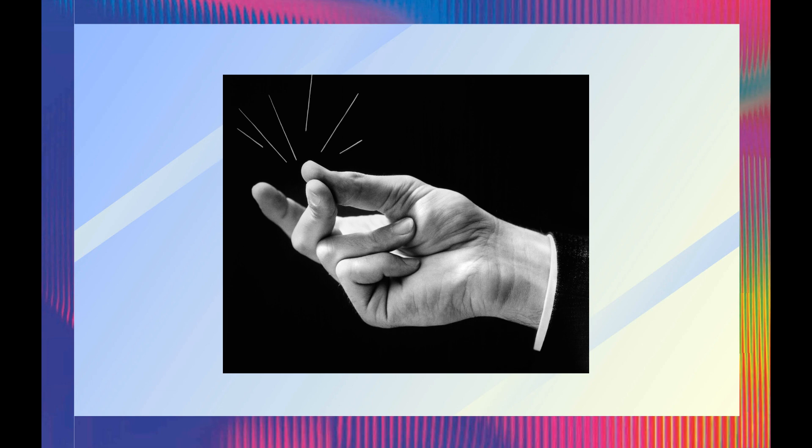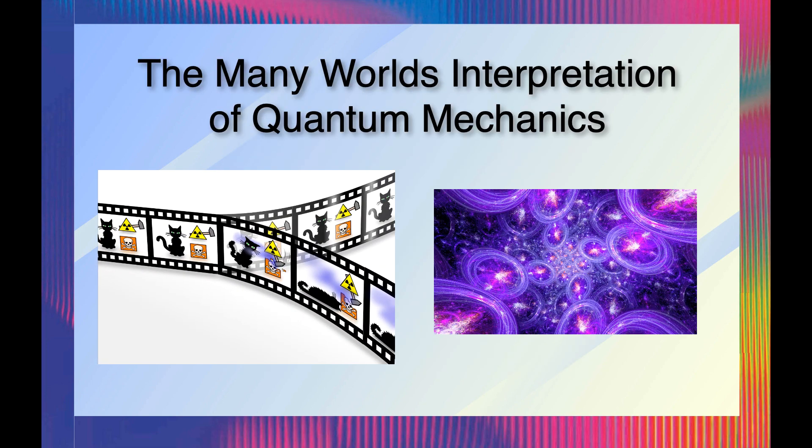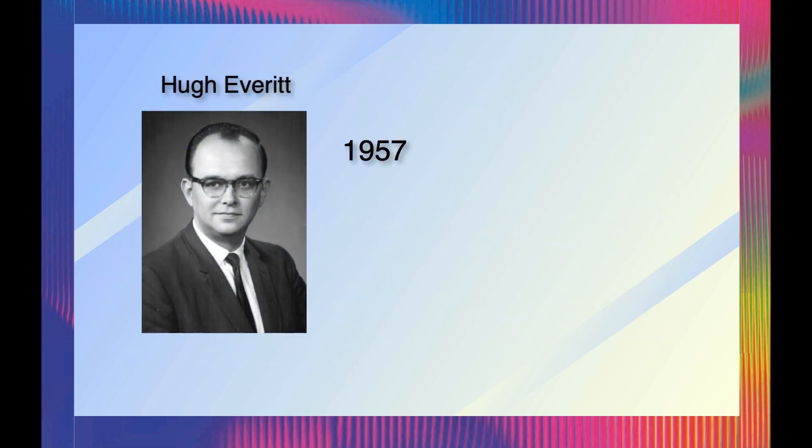One for each possible quantum outcome among all the different quantum states composing the molecules of your fingers. This is the many worlds interpretation of quantum physics, first proposed and explored by Hugh Everett in his doctoral thesis in 1957.